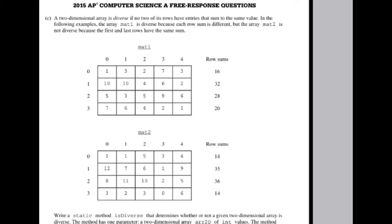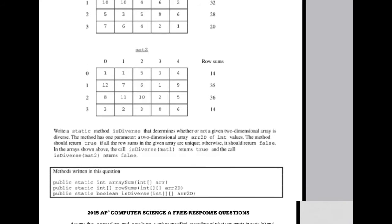In the following examples, and then it shows you all of that. Write a static method is diverse that determines whether or not the given two-dimensional array is diverse. The method has one parameter, R2D, and it should return true or false. False if it's not diverse, true if it is diverse.